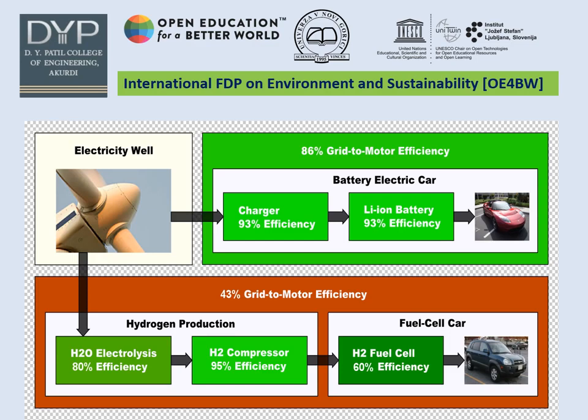Regarding grid-to-motor efficiency: if using conventional hydrogen electrolysis for hydrogen production, the system has around 85% efficiency feeding into a fuel cell with 60% efficiency, which then feeds to the car. The overall efficiency achieved through this hydrogen pathway is only 43%.